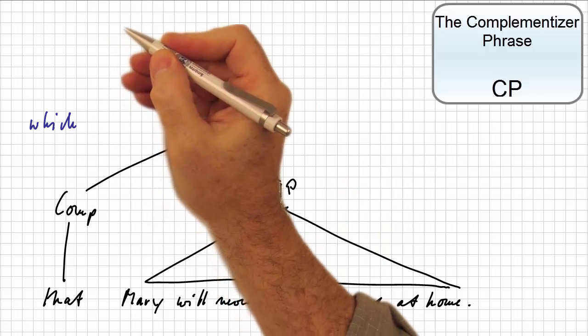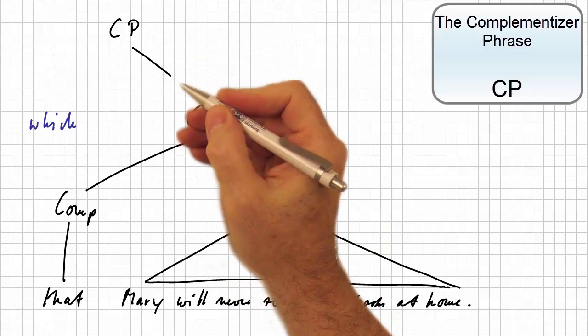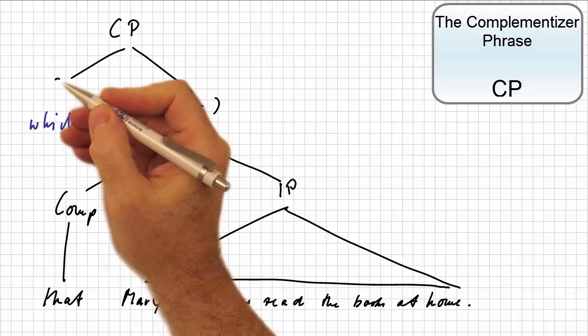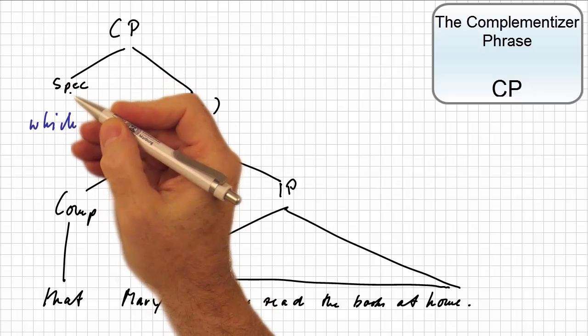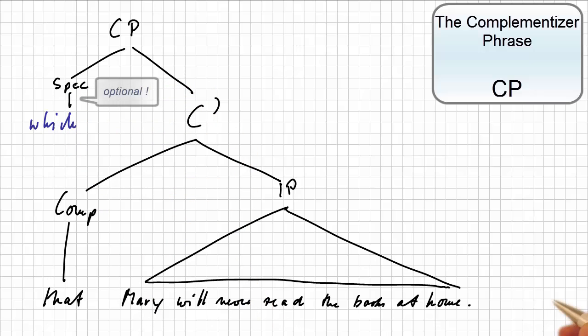The top-level node is now the complementizer phrase with an optional specifier, which typically is a position for WH elements such as who or how.